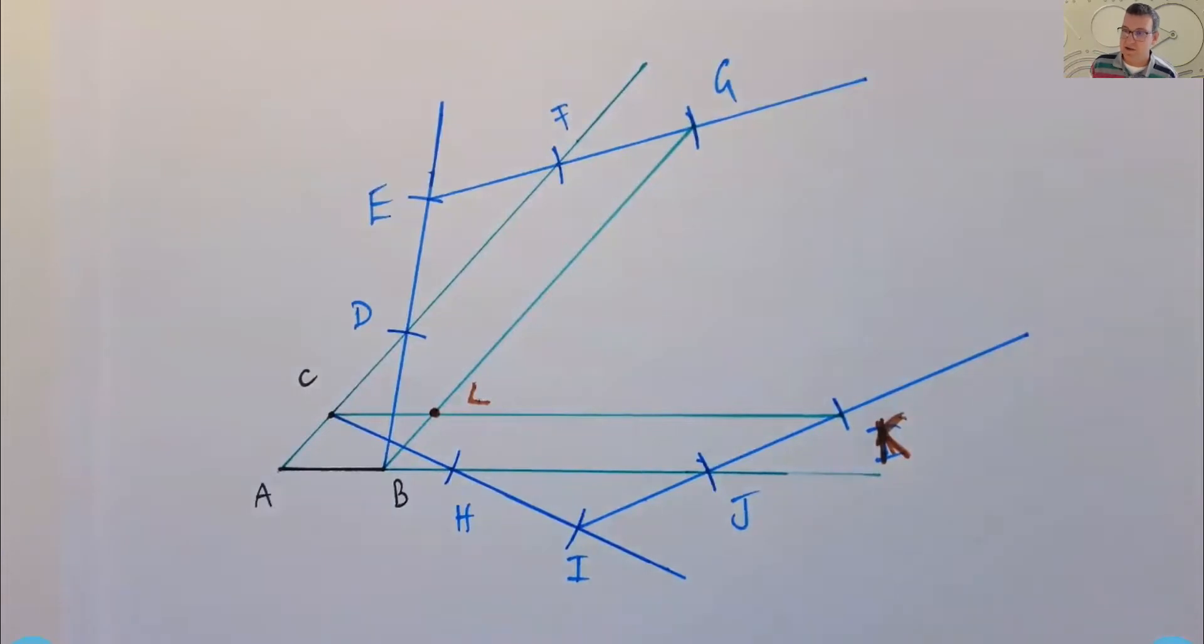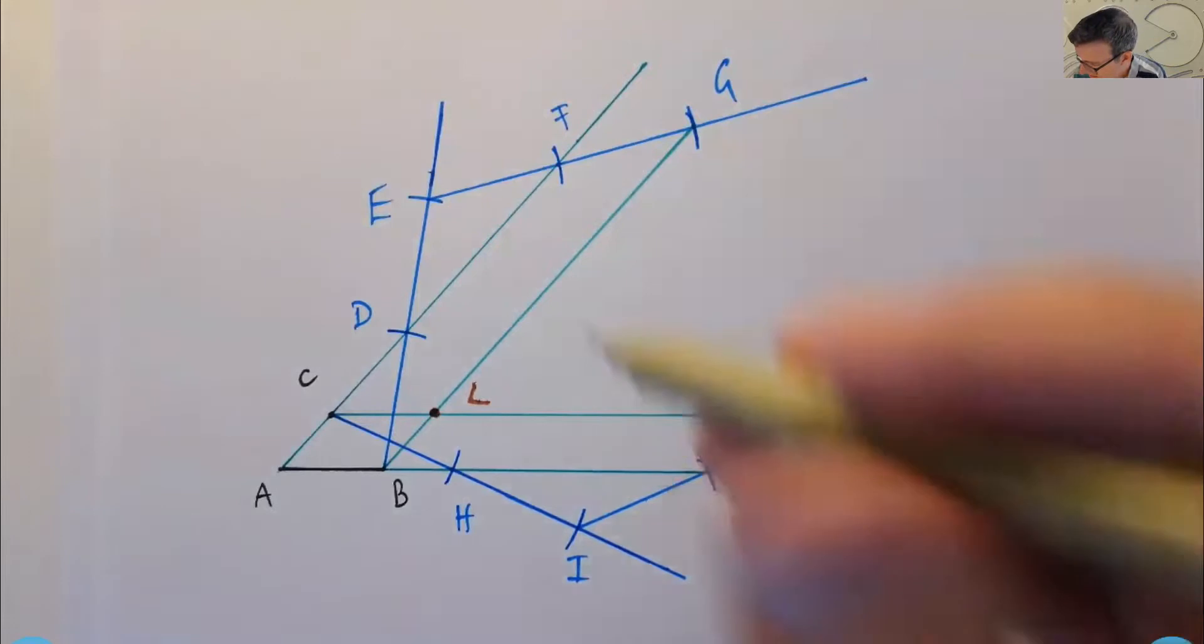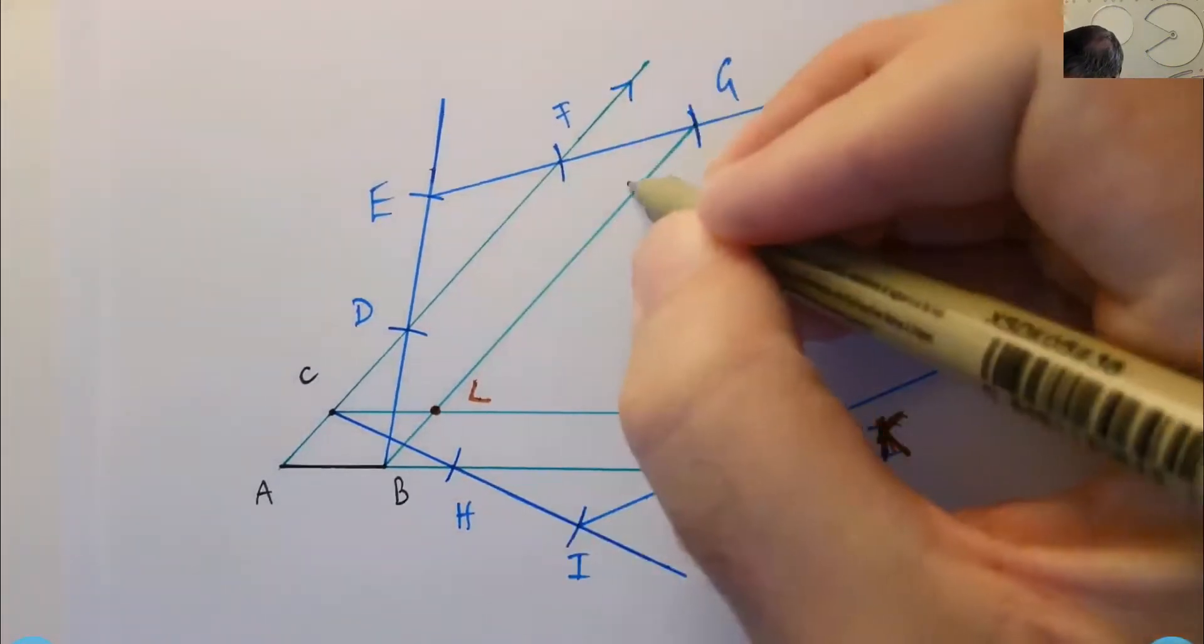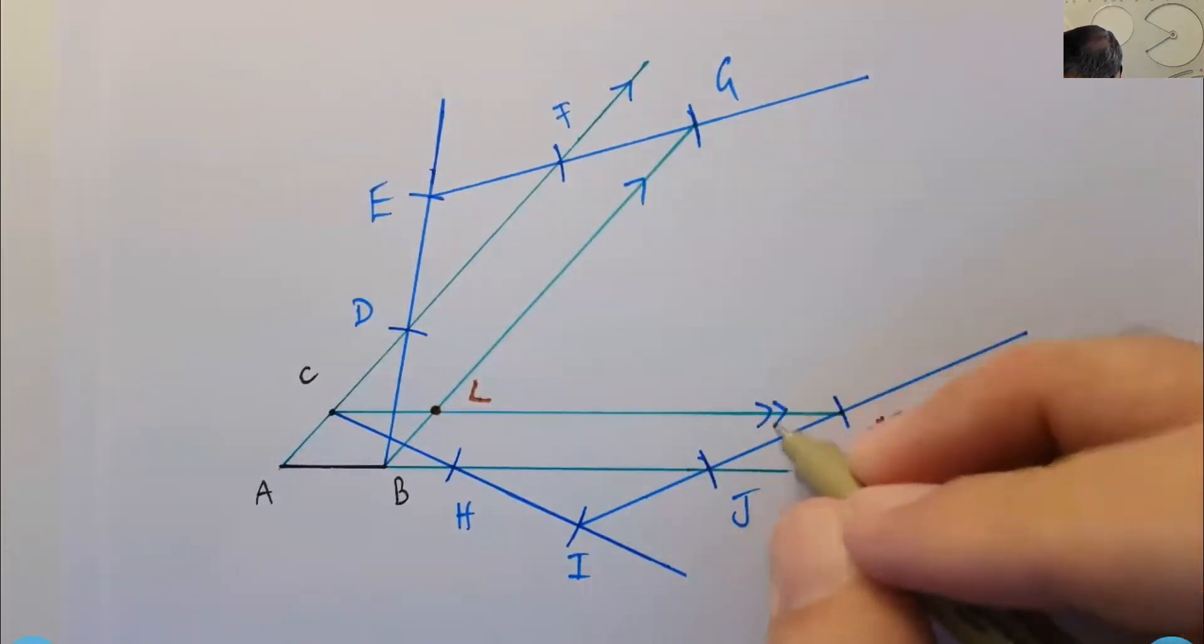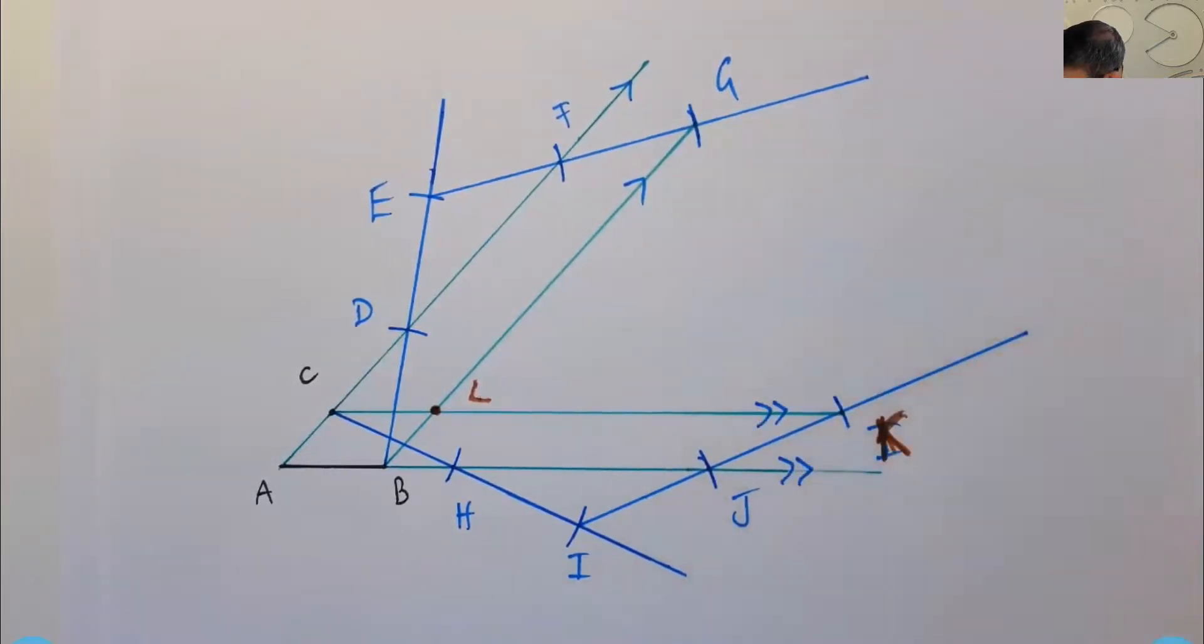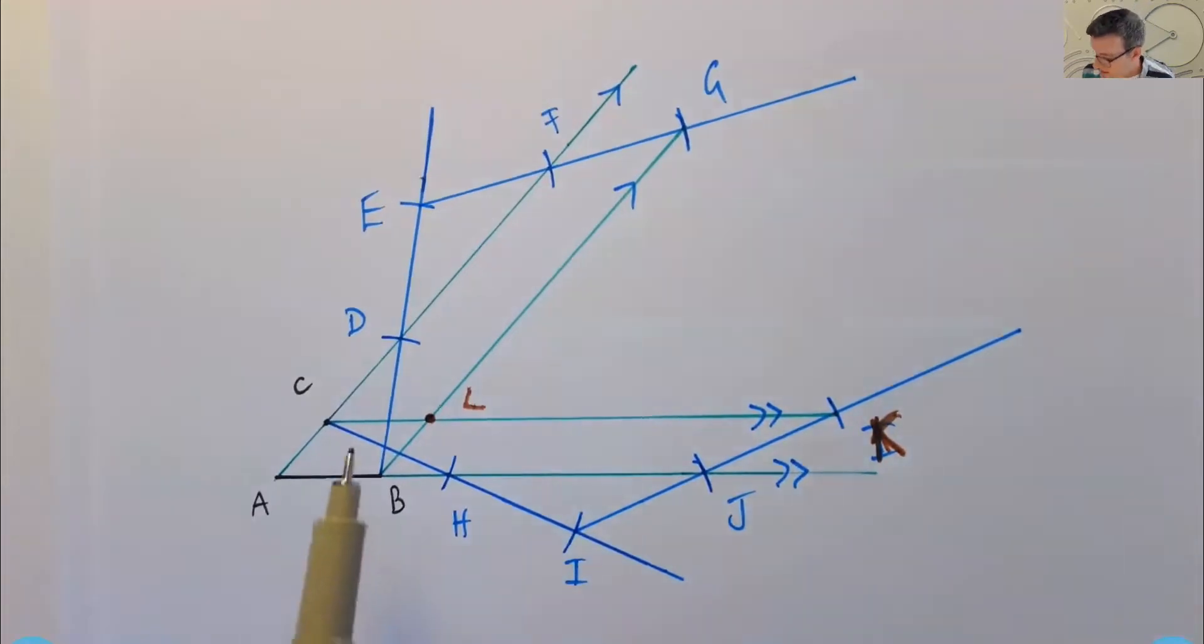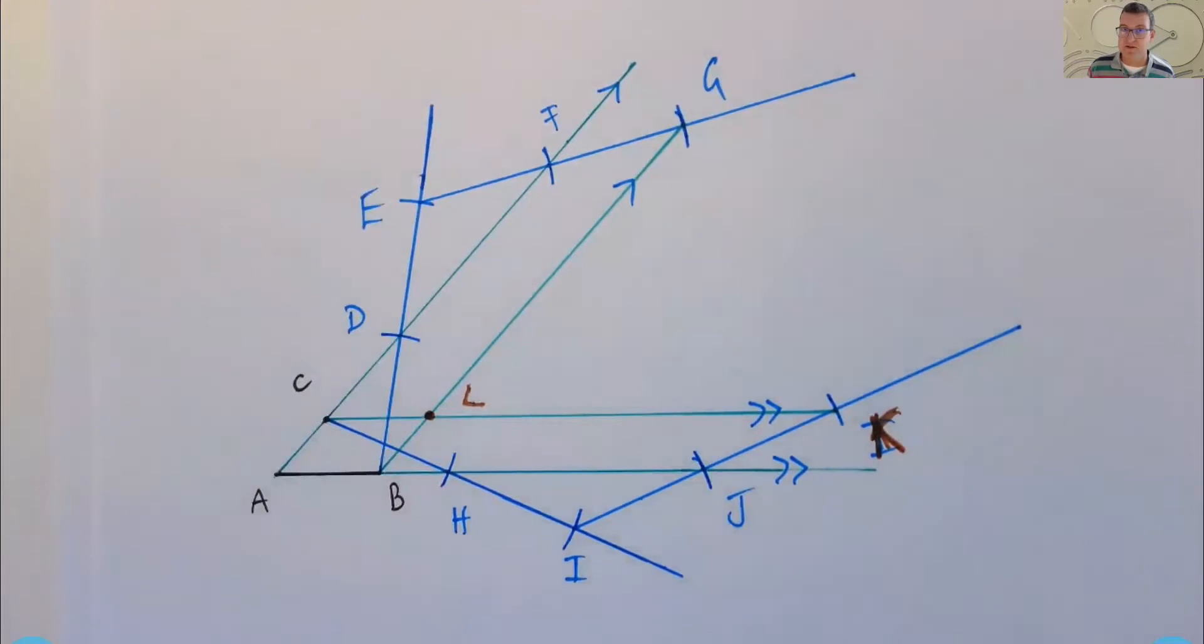All right. So you can see that these two lines are parallel. These two lines are parallel. Okay. So in this quadrilateral ACLB, we must have two pairs of parallel sides. Okay. So that means it must be a parallelogram.